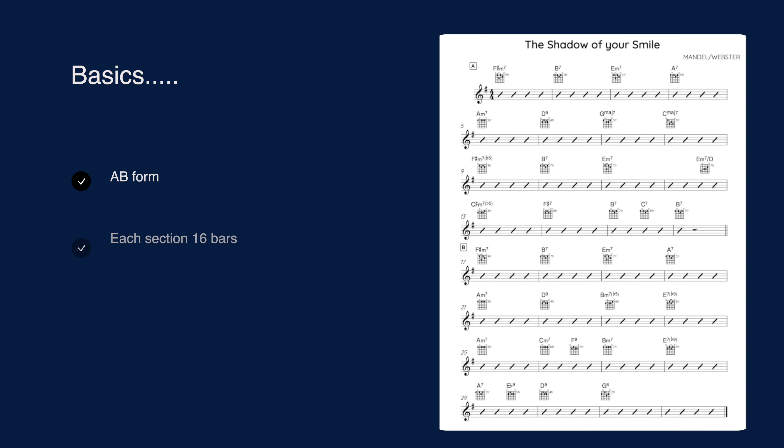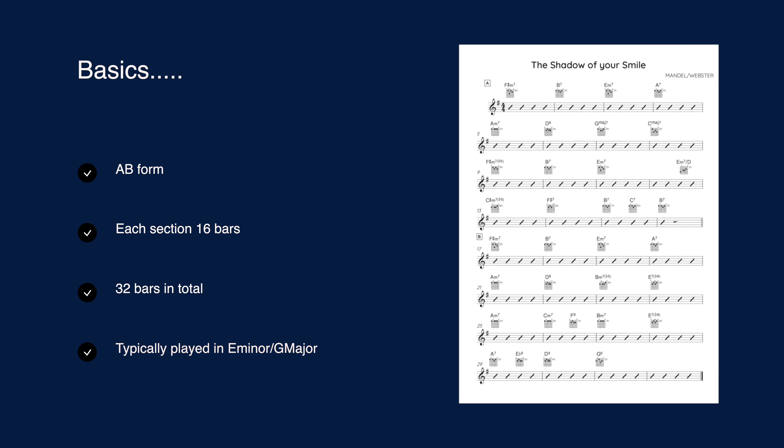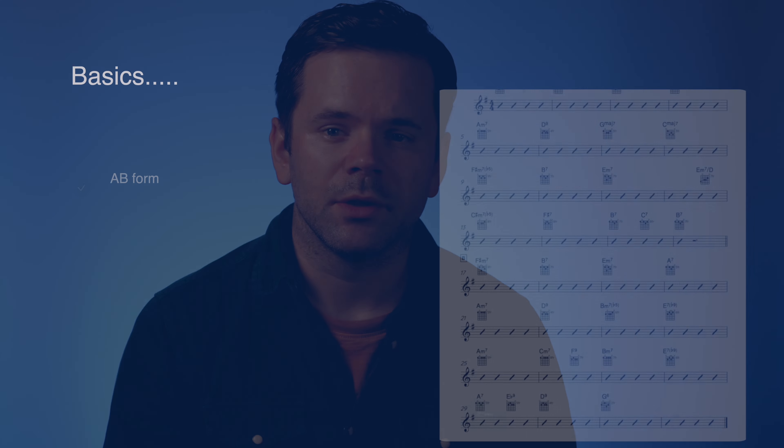This song dates back to 1965. I believe it was written for a film called The Sandpiper, written by Johnny Mandel with lyrics added by Paul Webster. Onto the basics of this tune. It is in AB form with each section lasting 16 bars, giving us 32 bars in total. Now it's typically played in the key of E minor or G major, and look at the key signature, we've got one sharp.